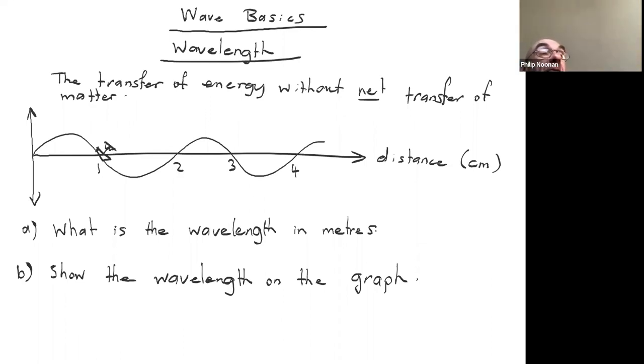So there are two kinds of graphs we can look at. One is the amplitude variation vertically, let's say amplitude versus distance on that axis there. So there are two questions. We'll start with the second one first. Let's show the wavelength on the graph. The wavelength is defined as the distance between two points of equal phase.